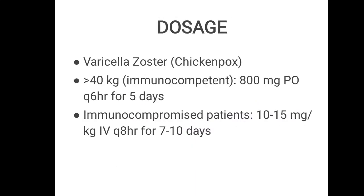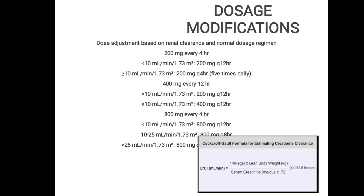Doses for varicella zoster and chickenpox: in immunocompetent patients greater than 40 kg, 800 mg per oral six times a day for 5 days. In immunocompromised patients for the same indication, the dose must be adjusted to 10 to 15 mg per kg IV every 8 hours (TID) for 7 to 10 days, with dose modification based on renal function.